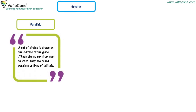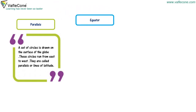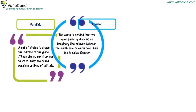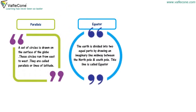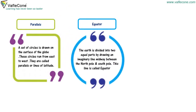Equator. The earth is divided into two equal parts by drawing an imaginary line midway between the north pole and south pole. This line is called the equator.